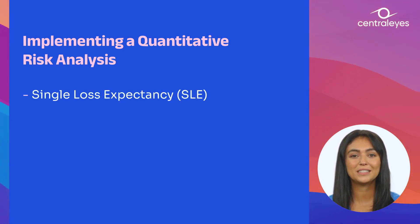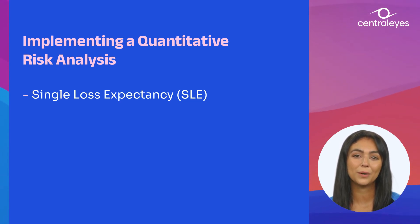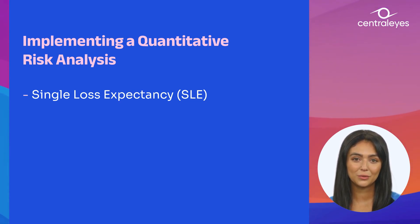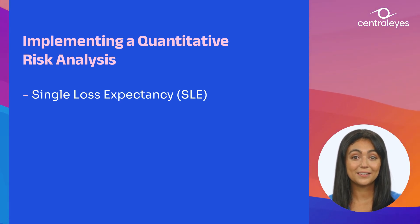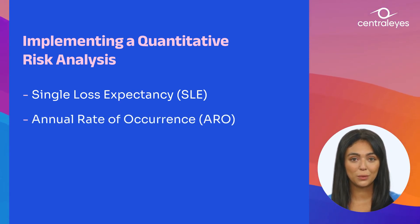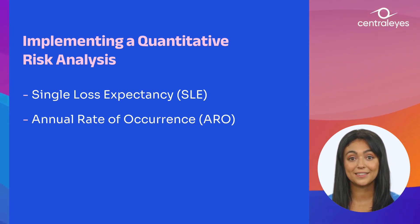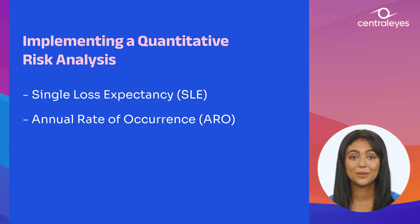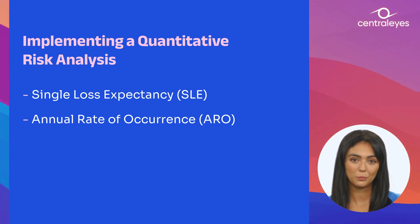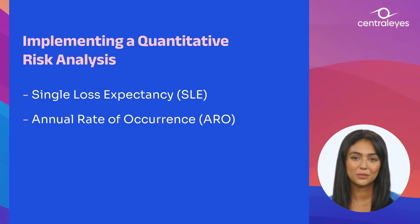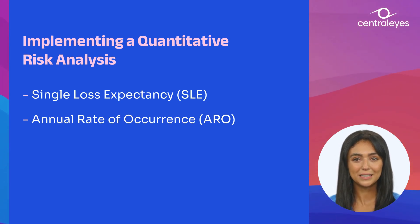The Single Loss Expectancy (SLE), which can be described as the expected monetary value loss from the occurrence of a risk on an asset. The Annual Rate of Occurrence (ARO) is the result of quantitative risk analysis that represents the estimated frequency of a specific threat or risk that will take place in any given year.